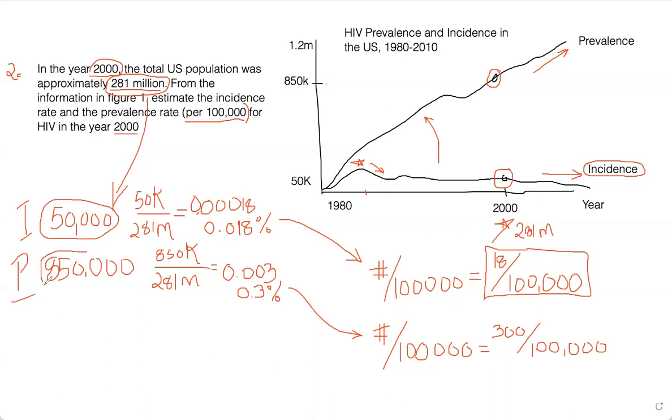Same thing, 300 over 100,000. That's the prevalence rate. If you were to extrapolate that beyond 100,000 to the total population of the United States, aka 281 million, then that would be 850,000 individuals in that total prevalence.